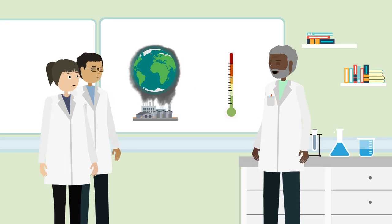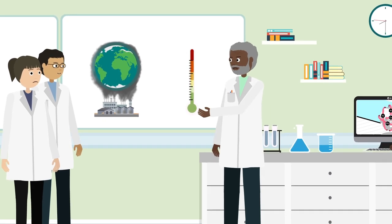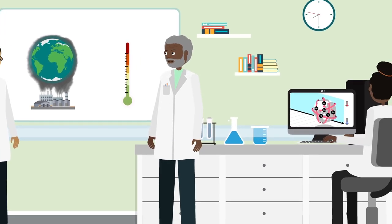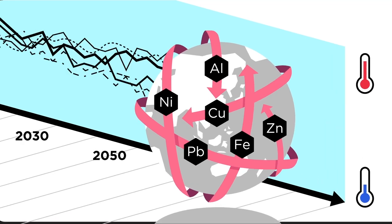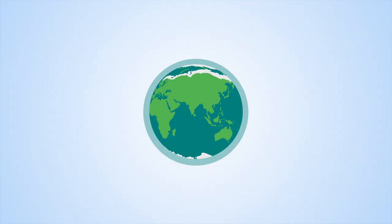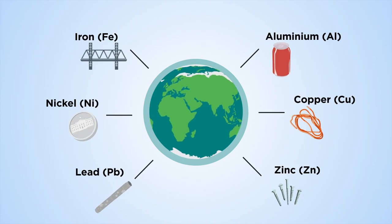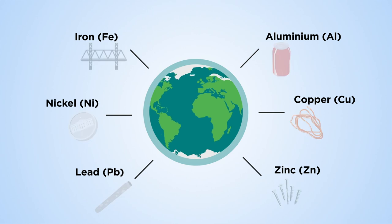An international research group consisting of experts from Japan, Australia, and Germany has modeled a variety of scenarios for our future metal usage. Their study covered global historic use of the six major metals, which account for 98% by mass of all metal production.